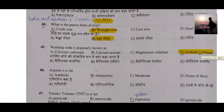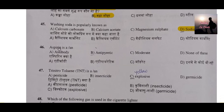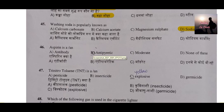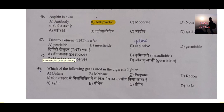Question number 46: Aspirin is what — an antibody, an antipyretic, a moderate, or none of the above? It is an antipyretic. Aspirin acts as a painkiller for stomach burning or fever. Many people take aspirin without a prescription, but that is wrong because it has side effects on the body if taken in excess. Remember: do not take any medicine without a prescription from your doctor.